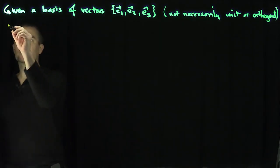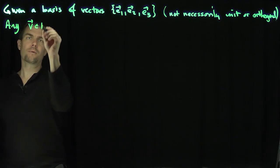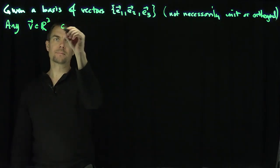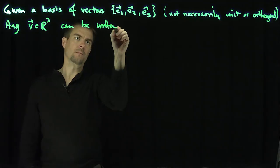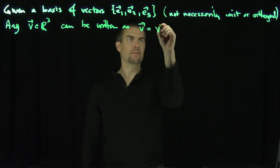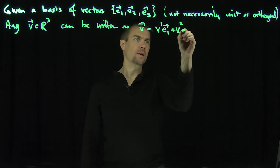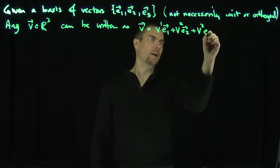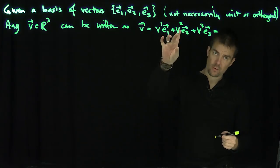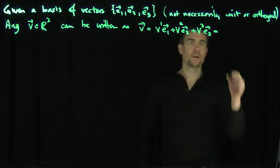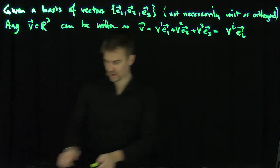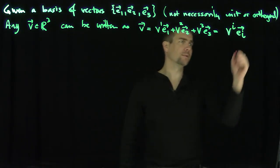Any vector v in R3 — and if you don't like 3, replace it with n — can be written as v1·E1 plus v2·E2 plus v3·E3. Here we introduce upper and lower index notation. Using Einstein summation convention, whenever there's a repeated upper and lower index, we can write this concisely as v^i · e_i.